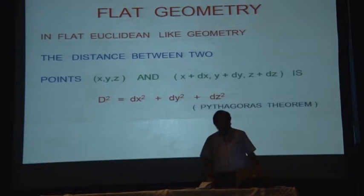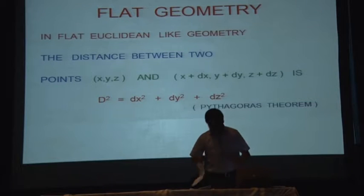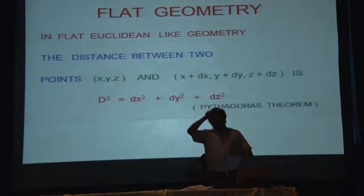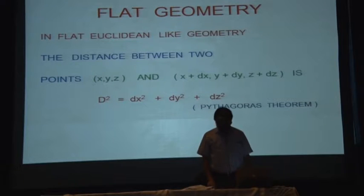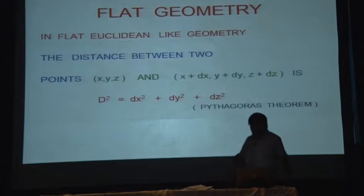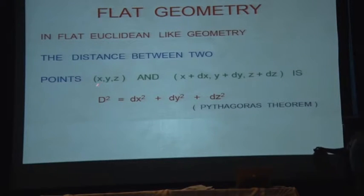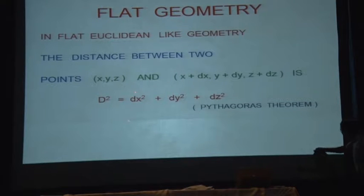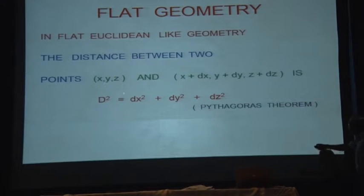But remember, this is violated in curved space. On a curved surface, the hypotenuse squared of a right-angle triangle is not equal to the sum of the other two sides squared. So this violation can be explained in the following way: the distance between two points now changes.